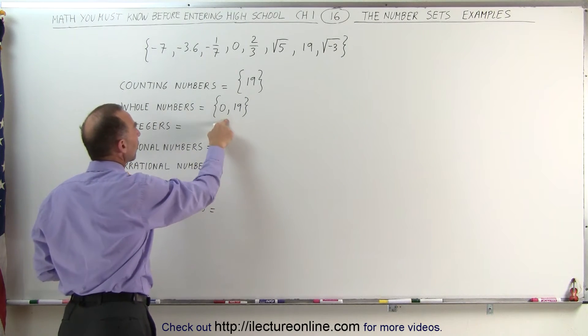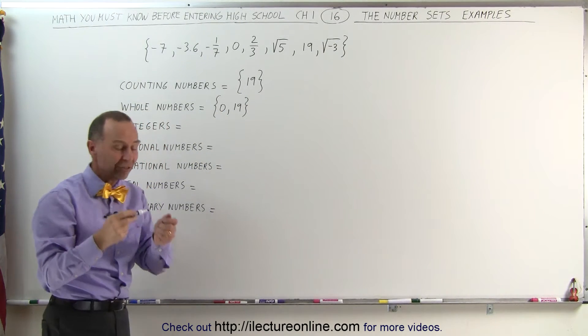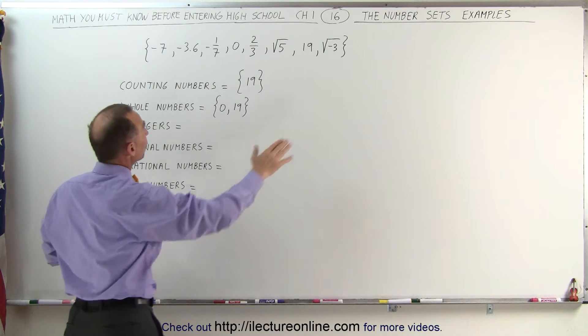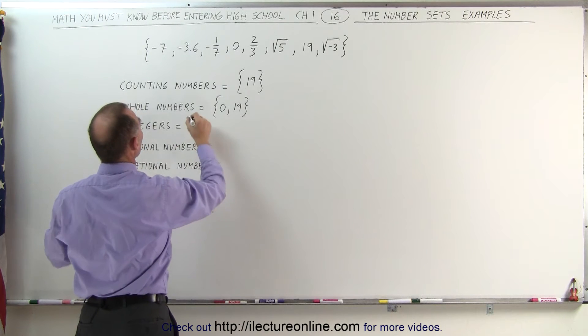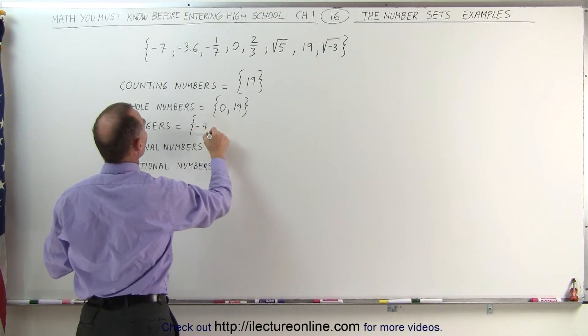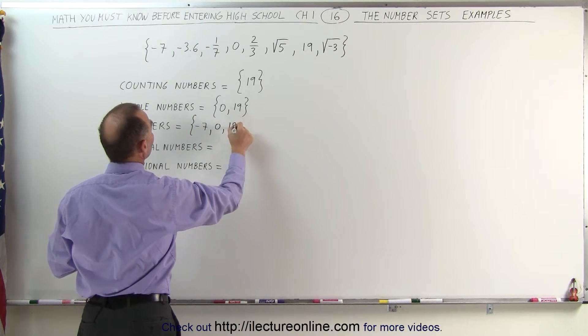Integers are all the whole numbers plus whole numbers with negative signs in front of them. And is there one here? Yes, there is. The number is negative 7. So the set of integers are the numbers negative 7, 0, and 19.